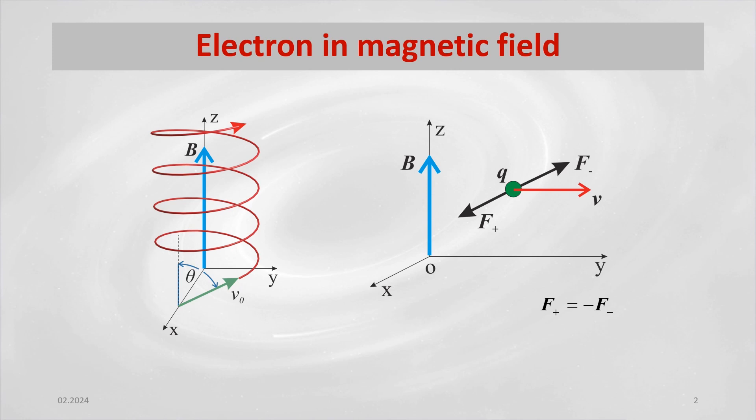In the following, we will show the significance of the ring structure of the electron model on the change in the direction of velocity of a charged particle moving in a homogeneous magnetic field.